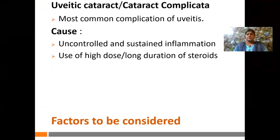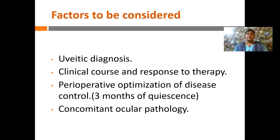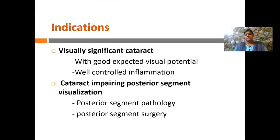There are few factors which, when properly modified pre-operatively, can give a good post-operative outcome. It starts with the uveitis diagnosis — few uveitis conditions respond very well to therapy, and if there is good quiescence in the pre-operative period you will have a good post-operative outcome. The thumb rule is three months of quiescence: do not rush for cataract surgery in uveitis patients. Also look for concomitant ocular pathology like optic nerve and macular involvement to predict post-operative visual outcome. Indications are broadly divided into two categories: visually significant cataract with well-controlled inflammation, and cataract impairing posterior segment visualization.